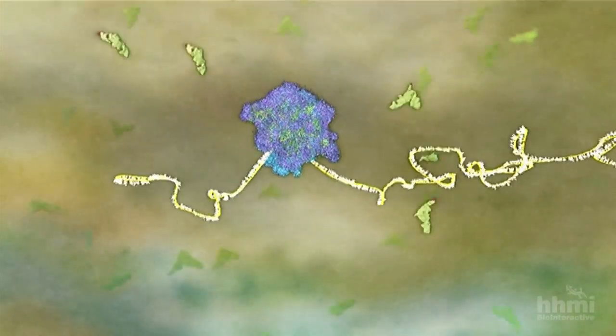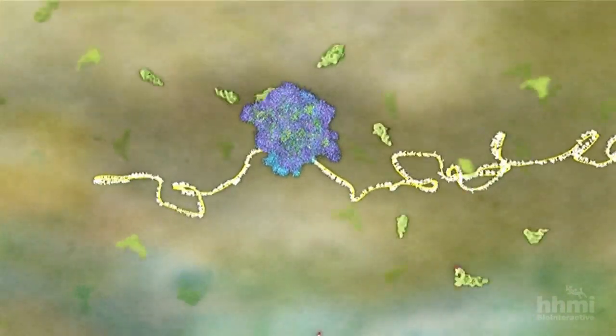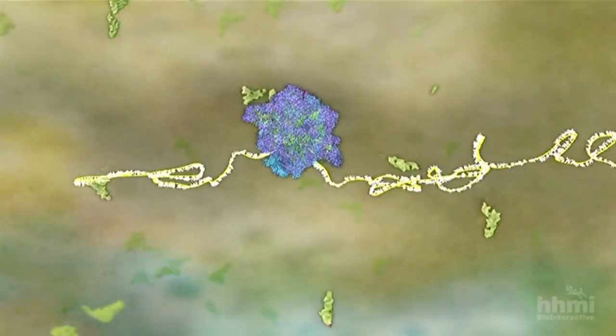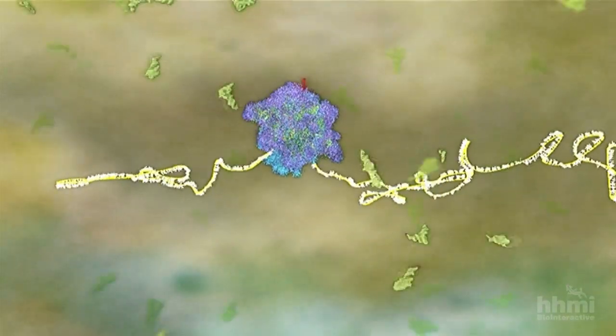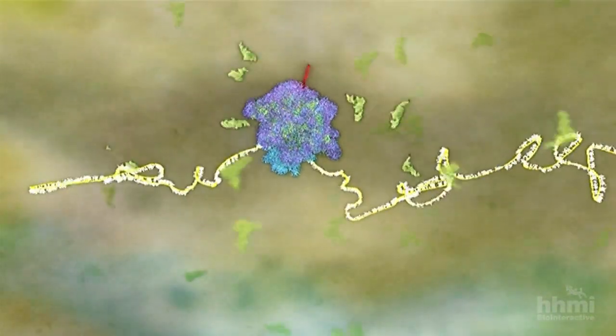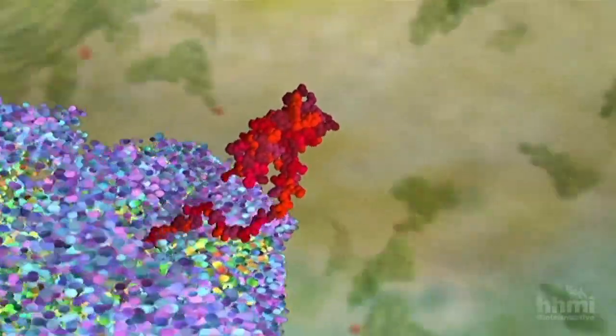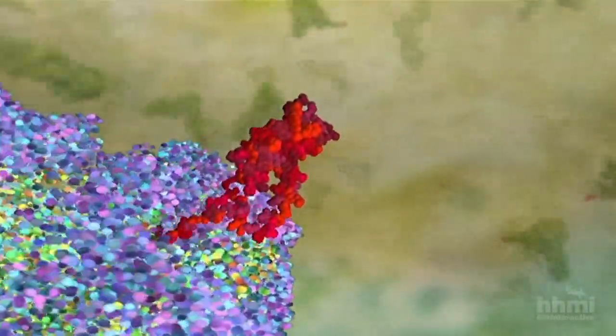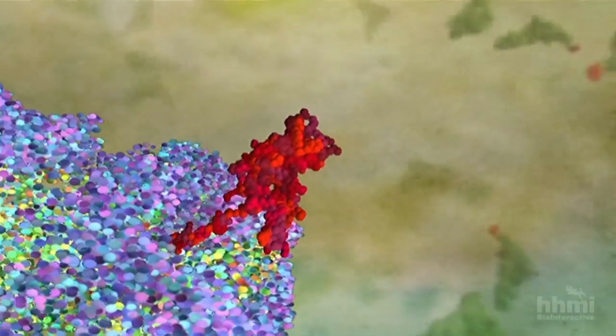There can be several million ribosomes in a typical eukaryotic cell. These complex catalytic machines use the mRNA copy of the genetic information to assemble amino acid building blocks into the three-dimensional proteins that are essential for life.